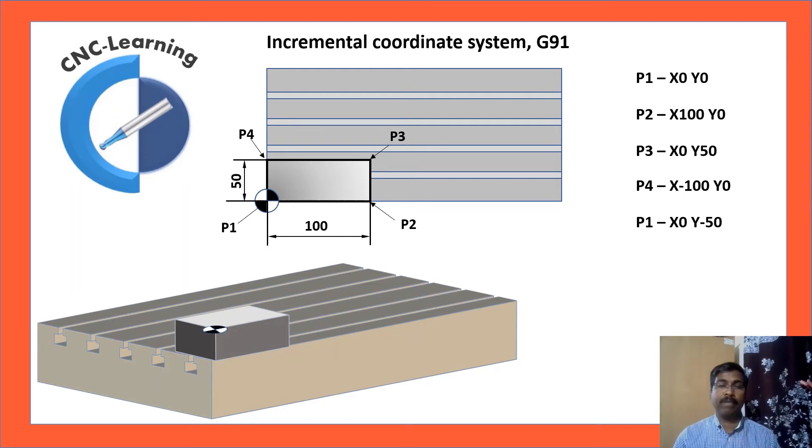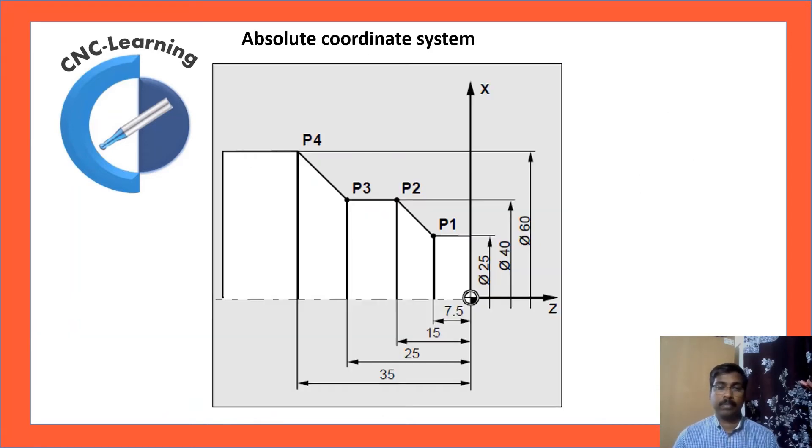Now, you can see another difference. Earlier, we said P1 is X0, Y0 when the tool is already in that location. Now, when the movement was from another location, this becomes like this.